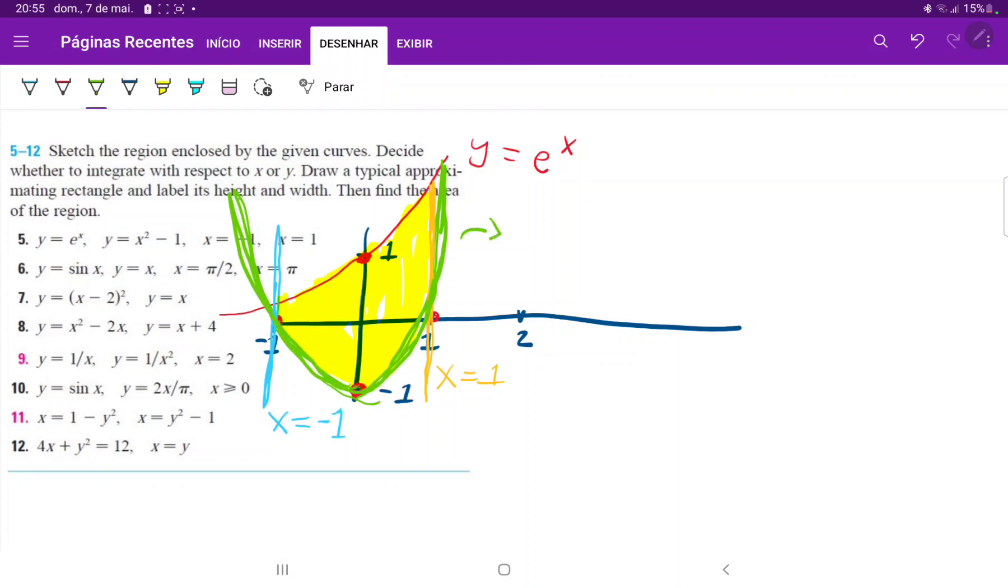We need to decide whether to integrate with respect to x or y. If we integrate with respect to x, we'll have a rectangle whose height is e to the x minus (x squared minus one). Throughout this yellow area, the upper and lower boundaries are consistent and don't change, unlike with horizontal rectangles.